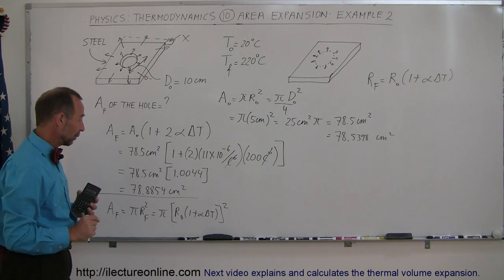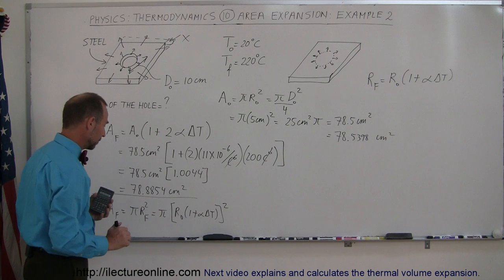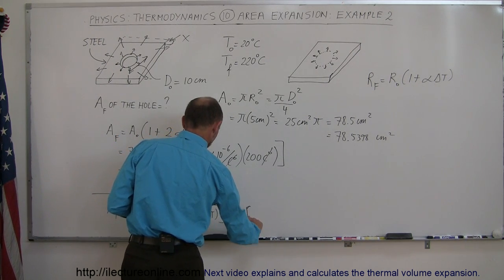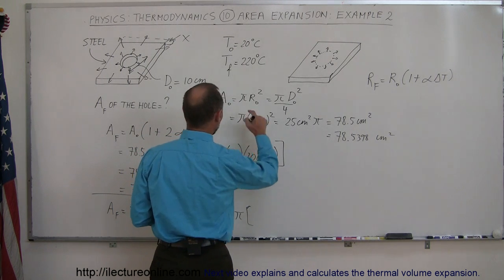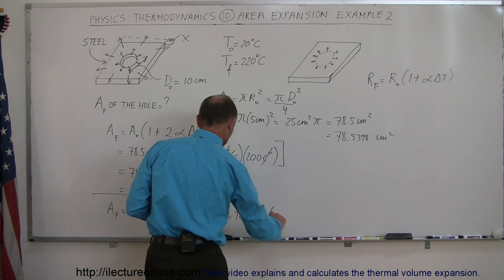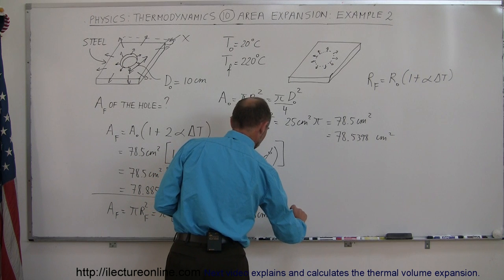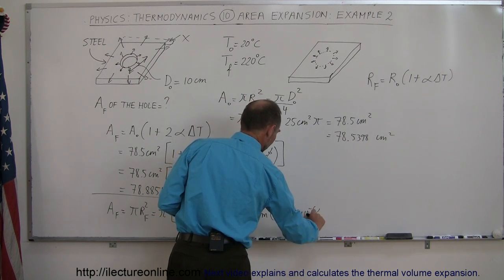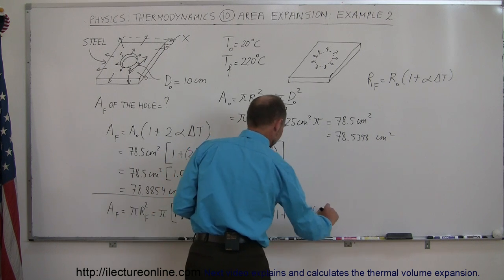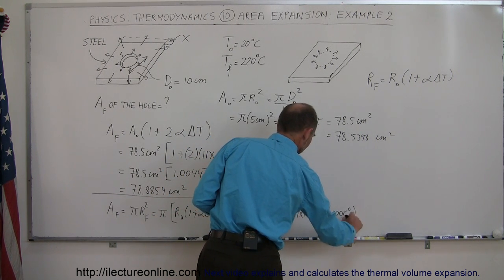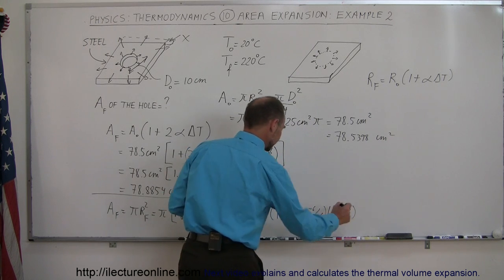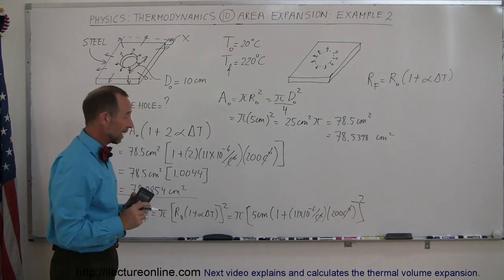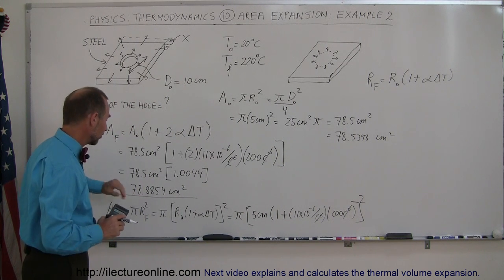So if I plug in the numbers for that, let's see if we get something that's slightly different from this number. This is equal to pi times r initial, which would be 5 centimeters, times 1 plus alpha, which is 11 times 10 to the minus 6 per centigrade degree, times delta T of 200 centigrade degrees. And of course, centigrade degrees cancel out, and we have to go ahead and take that number and square it. So let's do that.